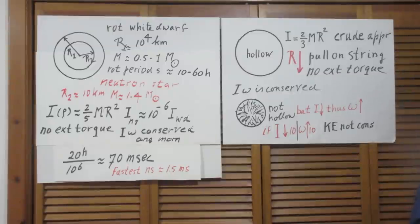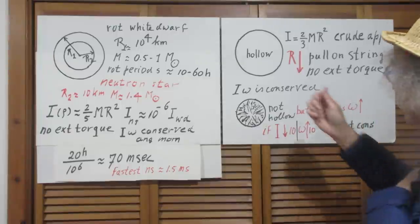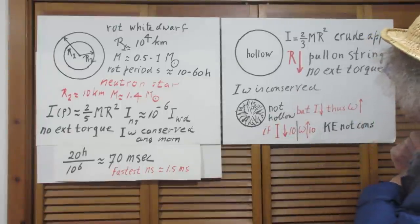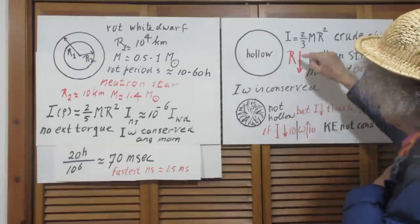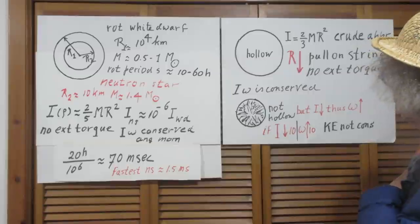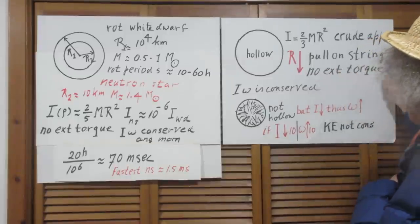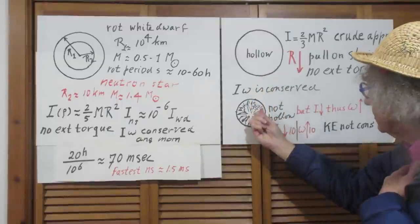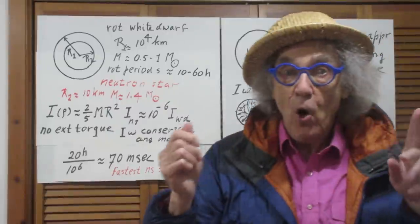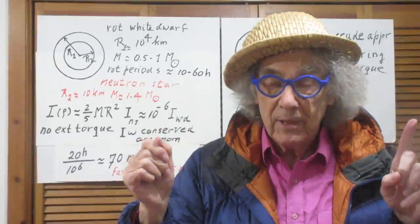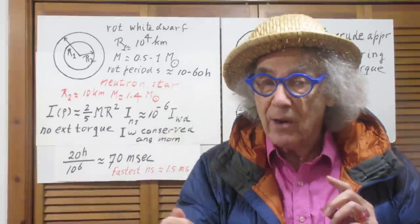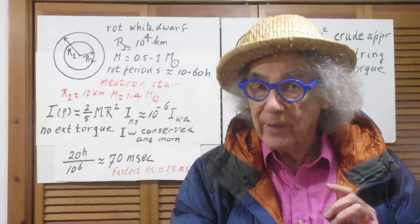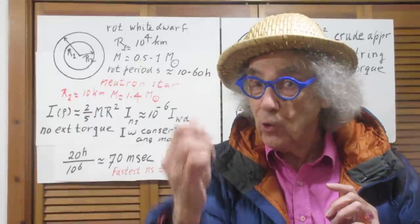Now I pull with the string and the radius of this sphere goes down. I pull all the string vertically down. That means there is no external torque. My pulling down is not a torque because I pull in the same direction as the force, so there is no torque on the system.